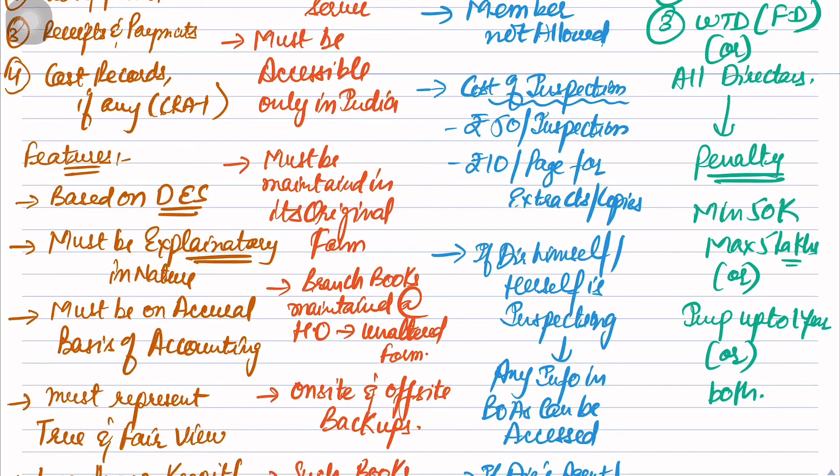The same penalty will change in Section 134 - imprisonment in 3 years for board report. So penalties are like normal for Books of Accounts: minimum ₹50,000, maximum ₹5,00,000, or 1 year imprisonment, or both. It is a compoundable offense - you can get away by paying the fine also.